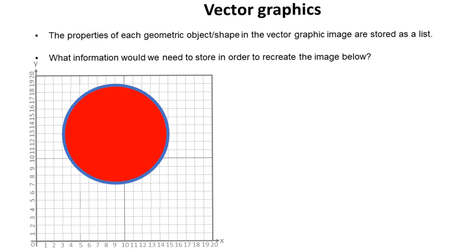So let's have a look at this fairly simple circle. The properties of any geometric object or shape in a vector graphic are stored as a list. So if I was to recreate this circle here, purely by information I wrote down in text, what information would I have to record? Pause the video for a second and have a think.